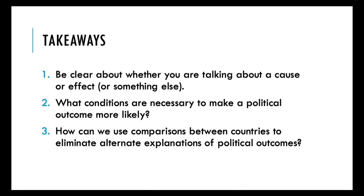Second, be clear about what you think is a cause versus an effect — do you think that democracy is a cause, or development is? Third, the key factor in talking about causality in political science is eliminating alternate explanations. And finally, in politics, we need to think probabilistically about what conditions make an outcome more or less likely.